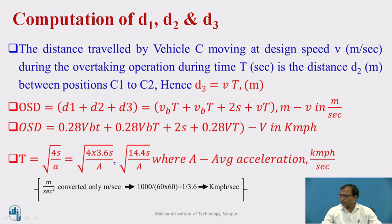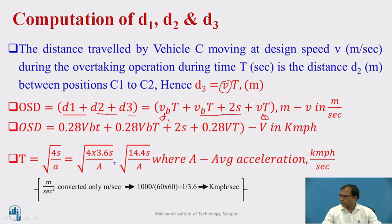D3 is the distance traveled by the opposing vehicle C moving at design speed V meters per second during overtaking time T. So D3 equals V multiplied by T, where V is in meters per second. The total OSD equals D1 plus D2 plus D3, which is VB·t plus (VB·T plus 2S) plus V·T. Converting to KMPH by multiplying by 0.278 (approximated as 0.28): OSD becomes 0.28·VB·t plus 0.28·VB·T plus 2S plus 0.28·V·T.